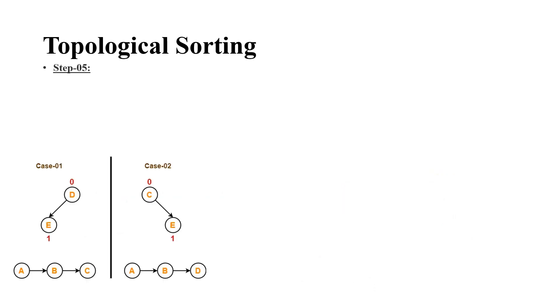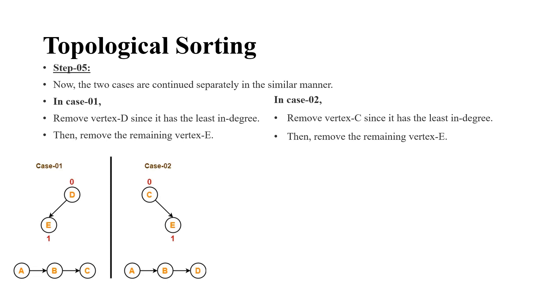And finally, we have to consider both the cases and then find the least indegree. In case 1, D is having least indegree. So, if we remove D, automatically E's indegree also will become 0. So, we are removing both in case of 1. And similarly, for case 2 also, if we remove C, E also will become 0 and remove the remaining vertex E also. So, both are reflected here.